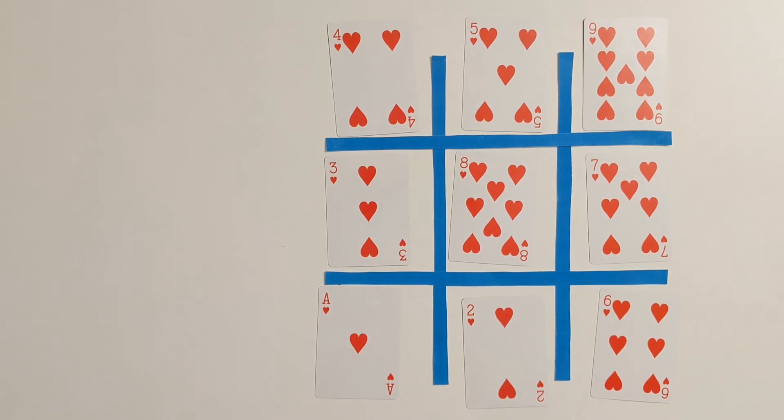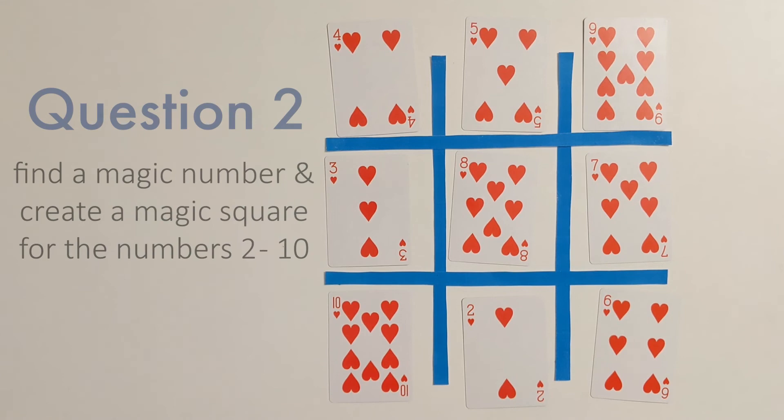What we're going to do for this is we're going to get rid of the number 1. And instead, we're going to add the number 10. Using the numbers 2 through 10, can you figure out what your new magic number will be? It may be the same one from the previous problem, or it could be something new.